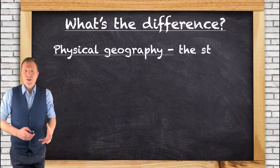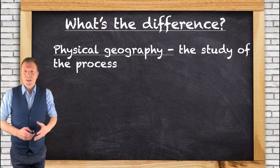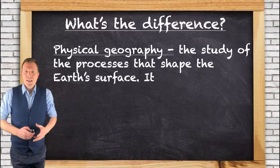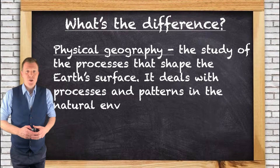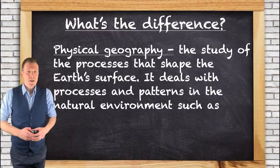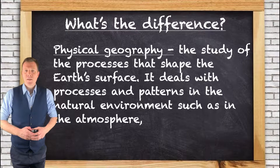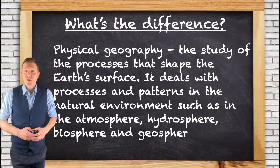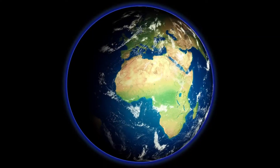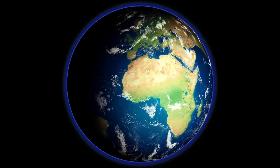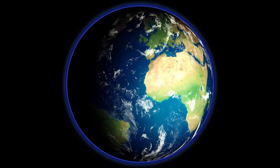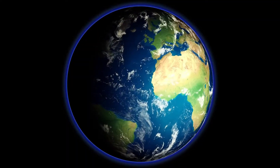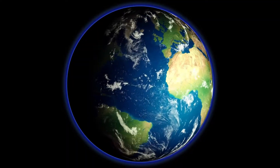Physical geography is the study of the processes and the shape of the Earth's surface. It deals with processes and patterns in the natural environment, such as in the atmosphere, hydrosphere, biosphere and geosphere. In physical geography, you will look at how the world works without us humans. It's about understanding a huge variety of features.